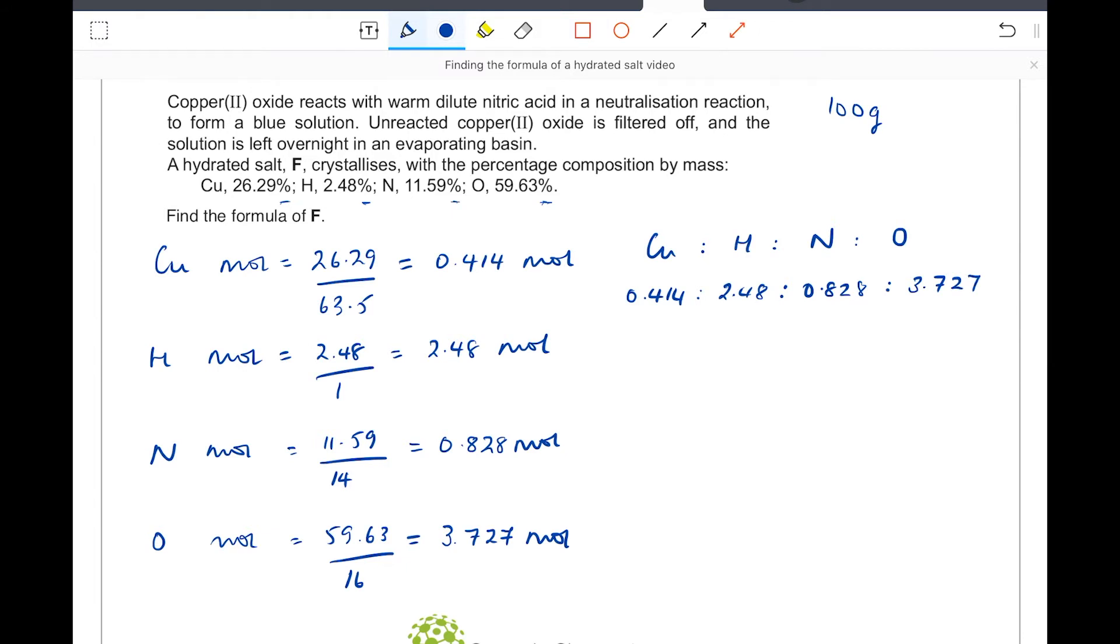Now, although these look like really scary numbers, the way we tackle this is the same as ever. We take the smallest number, in this case it's the copper, and divide the smallest number into itself and everything else. And that way we get a whole number ratio. So 0.414 divided by 0.414 is 1.